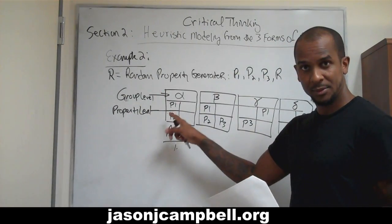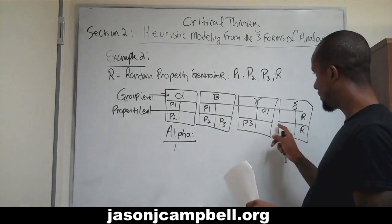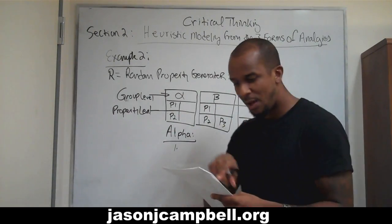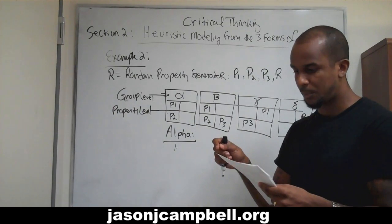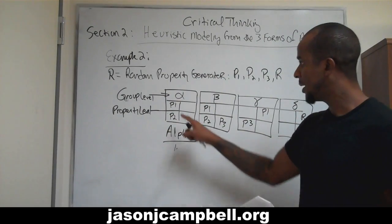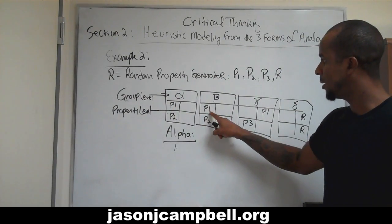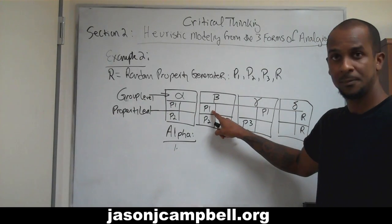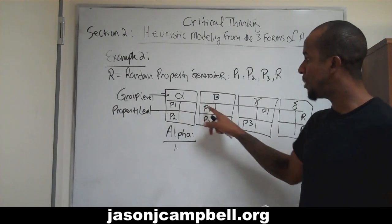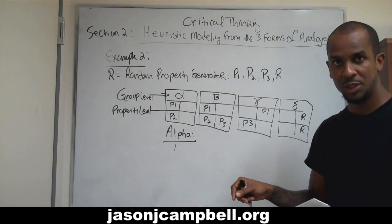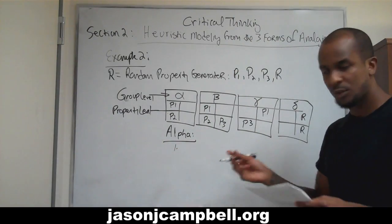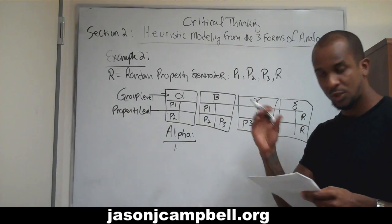Here are the properties at the property level. Here are the groups. We say alpha has a positive analogical relationship with beta with respect to P1. Alpha and beta both share P1, so they have a positive analogical relationship with respect to P1. Let's go to number two.